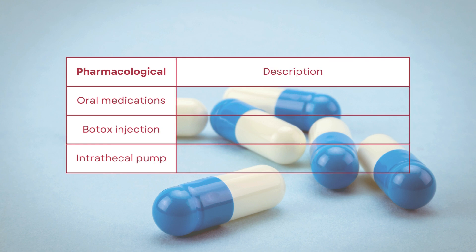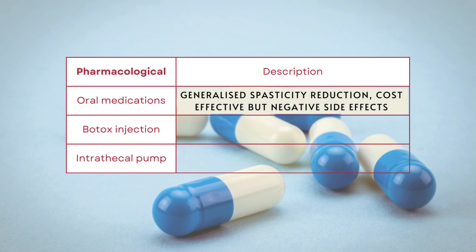For pharmacological options, I'll be talking about the mainly commonly used ones. First, we have oral medications such as Baclofen. These medications have a generalized effect on the body, meaning they cannot be targeted to a specific upper limb or lower limb. They are used because of cost-effectiveness and can achieve some reduction in spasticity. However, the downside is side effects — the more oral medication you take, the more prominent the drowsiness or sedative effects become.